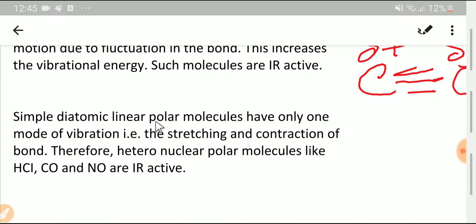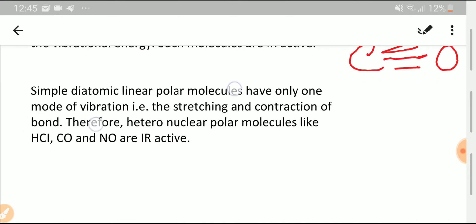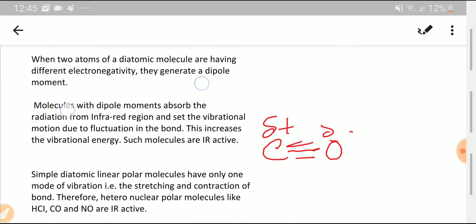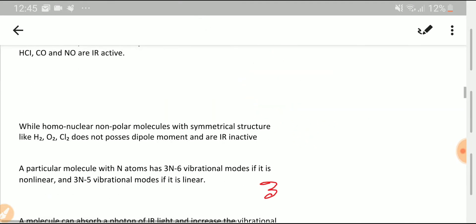Simple diatomic linear polar molecules like carbon monoxide have only one mode of vibration, that is the stretching and contraction of bond. Thus heteronuclear polar molecules like HCl and CO are IR active. However, our main target is to explain about ozone.